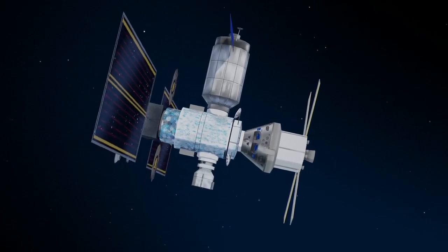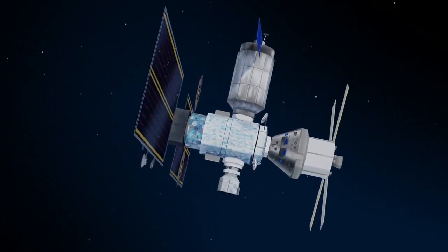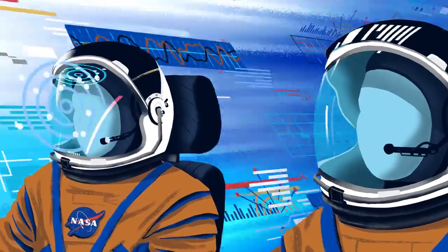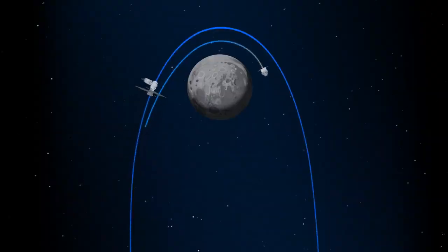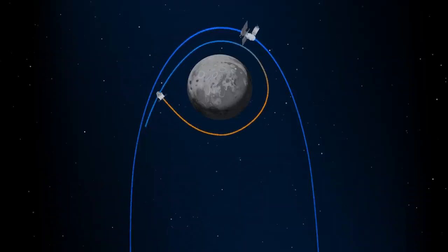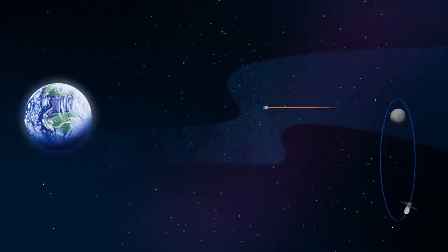Once back aboard the Orion spacecraft and undocked from Gateway, the crew fire their engine once to break out of the halo orbit, and once again to sling the spacecraft around the Moon, placing it on a multi-day trajectory back towards Earth.